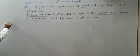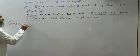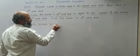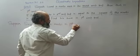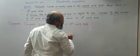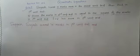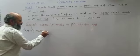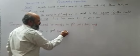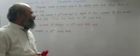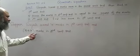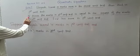First, we will suppose what Swiss scored. We suppose Swiss scored x marks in the first unit test, and x plus 10 marks in the second unit test. This is because Swiss scored 10 marks more in the second unit test than in the first unit test.